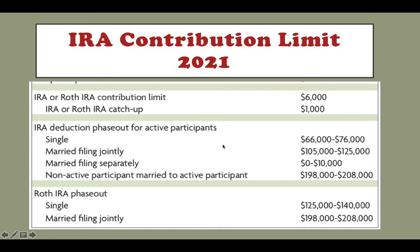However, if your modified AGI is less than $66,000, you can fully deduct your contribution. If your modified AGI is between $66,000 and $76,000, then you can only deduct a portion of the contribution.